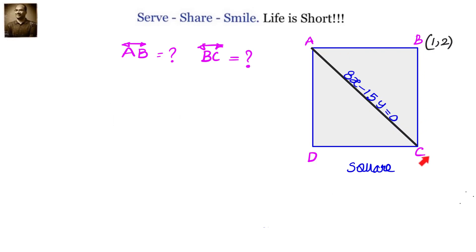Hello friends, welcome back — hearty welcome to you. We have a square ABCD to solve this coordinate geometry straight lines problem. We have a square ABCD with a diagonal AC given by 8x minus 15y equals to 0.